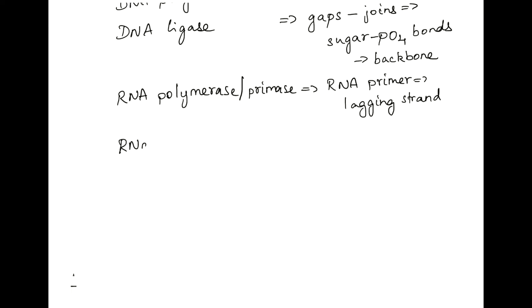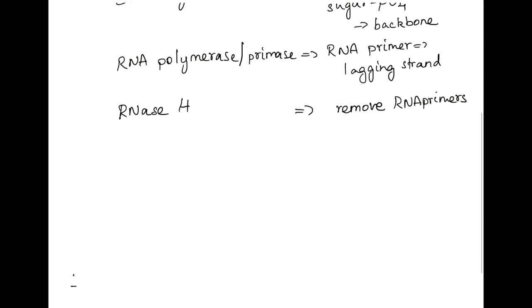That leads us to the need for another enzyme, RNase H. The RNase H is the enzyme that will remove the RNA primers, and once they are removed from the lagging strand, DNA polymerase 3 will add the rest of the bases and fill the gap.